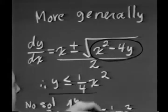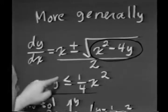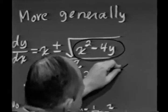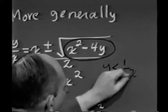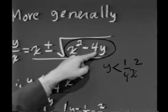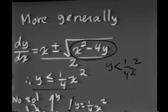So that tells me that not only must y be less than or equal to 1/4 x squared, but rather y must be less than 1/4 x squared. Because if y equaled 1/4 x squared, when this factor comes down into the denominator, I'm in trouble. I have a zero denominator.